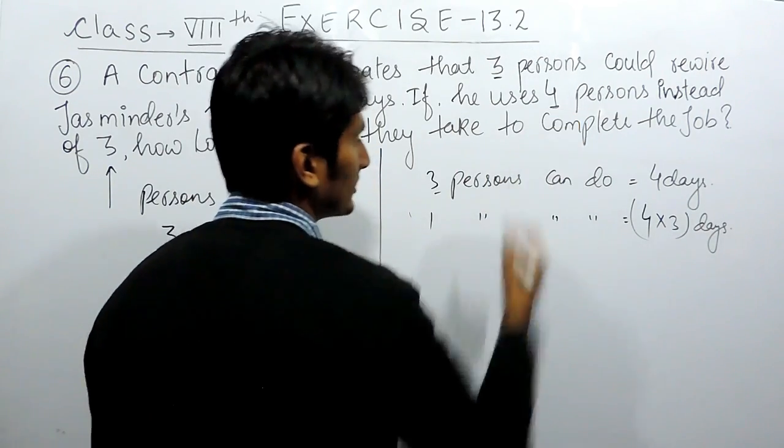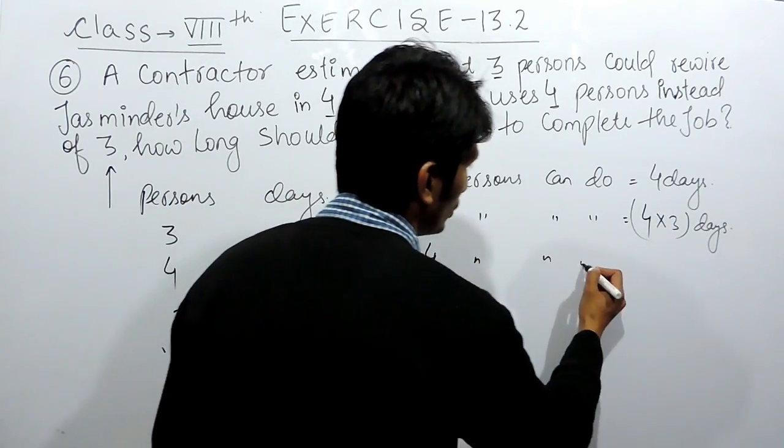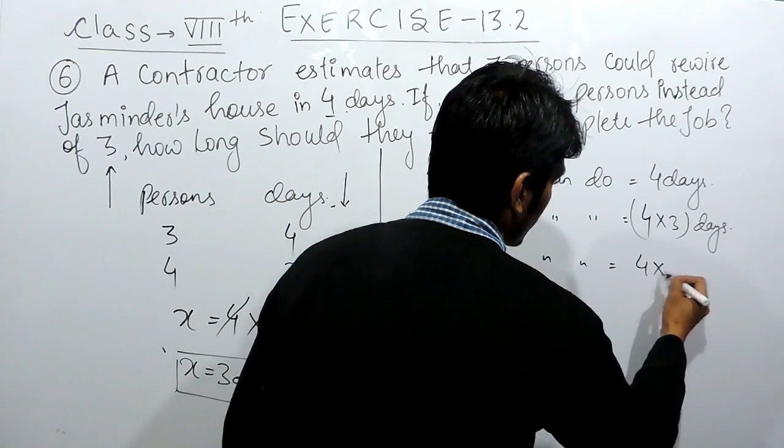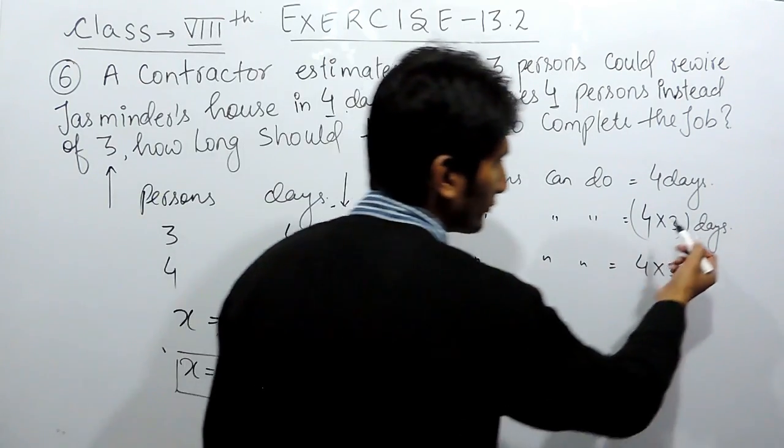Now, you have to find the 4 persons will take how many days to complete this job. So obviously, 4 persons can do this job in... Now, the number of persons has increased. So obviously, you have to decrease this.